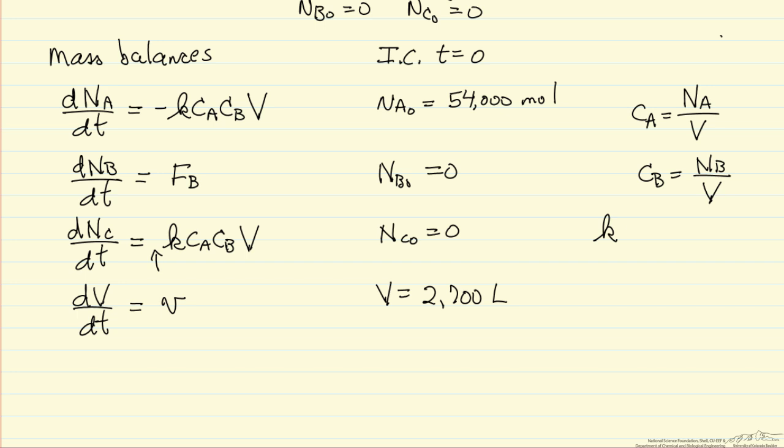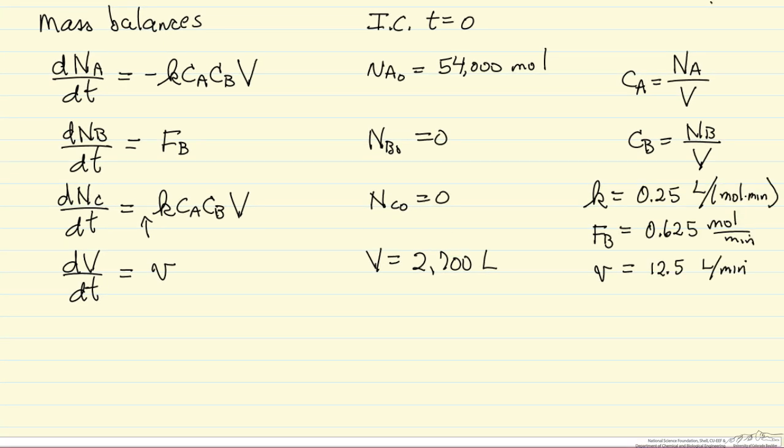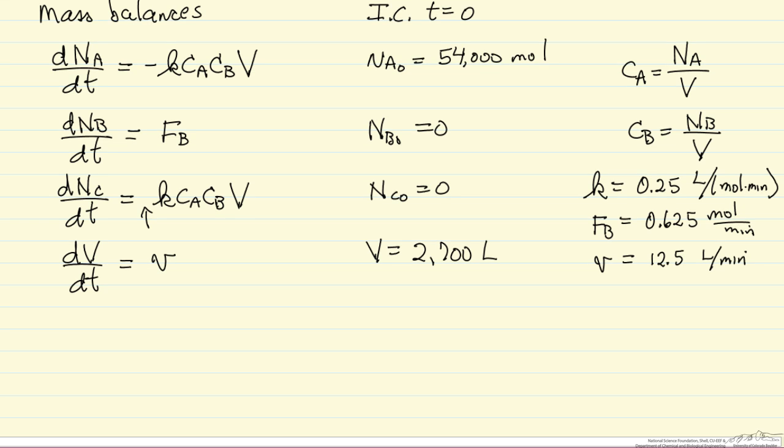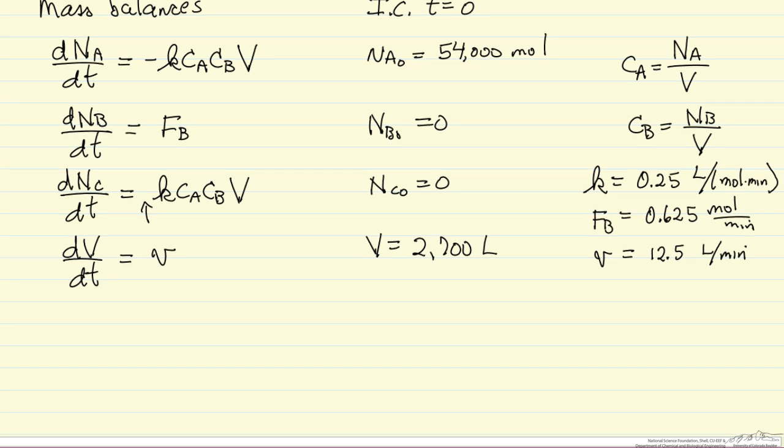We're going to have to put in the values for K, FB, into the rate expressions. So I've written down the three constants we need to use. Now we're going to solve all this with POLYMATH, and with POLYMATH we have to tell it our starting time and our final time, which is 200 minutes.